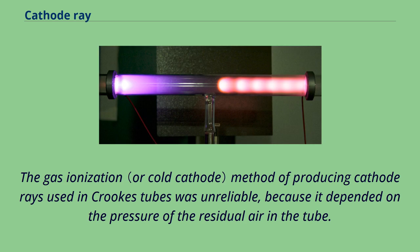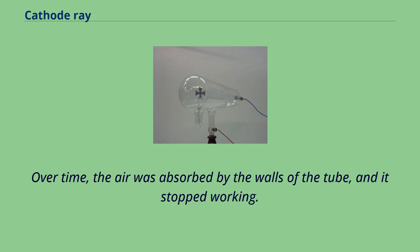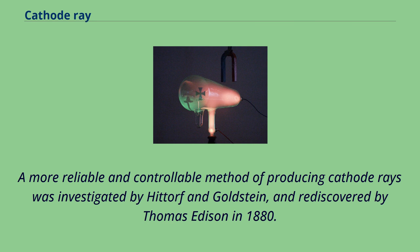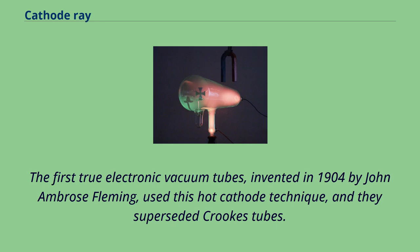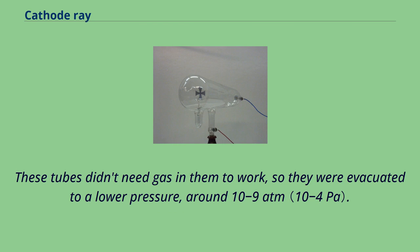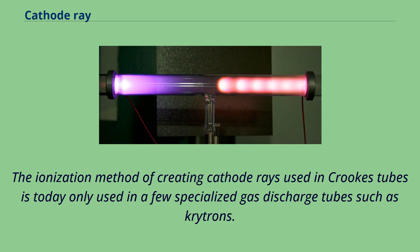The gas ionization method of producing cathode rays used in Crookes tubes was unreliable, because it depended on the pressure of the residual air in the tube. Over time, the air was absorbed by the walls of the tube, and it stopped working. A more reliable and controllable method of producing cathode rays was investigated by Hitterf and Goldstein, and rediscovered by Thomas Edison in 1880. A cathode made of a wire filament heated red-hot by a separate current passing through it would release electrons into the tube by a process called thermionic emission. The first true electronic vacuum tubes, invented in 1904 by John Ambrose Fleming, used this hot cathode technique, and they superseded Crookes tubes. These tubes didn't need gas in them to work, so they were evacuated to a lower pressure, around 10^-9 atmospheres. The ionization method of creating cathode rays used in Crookes tubes is today only used in a few specialized gas discharge tubes such as Cretrons.